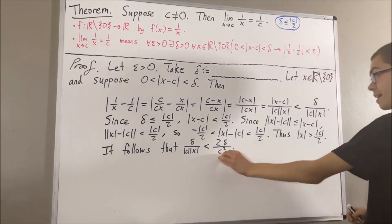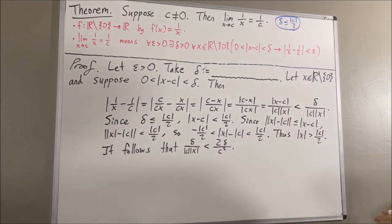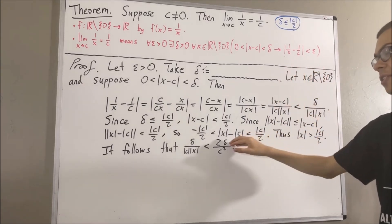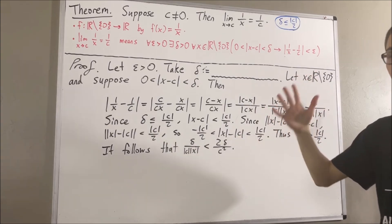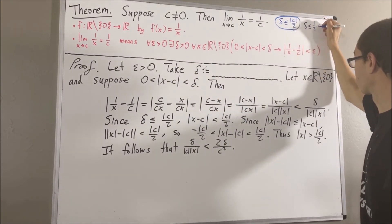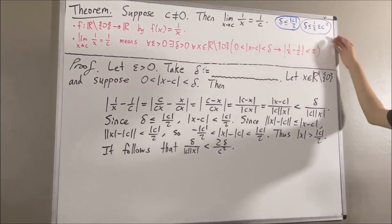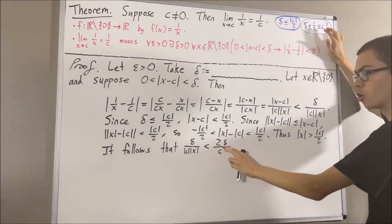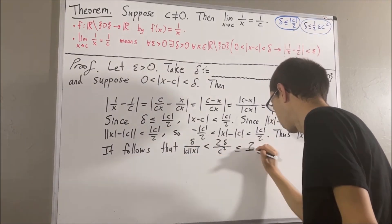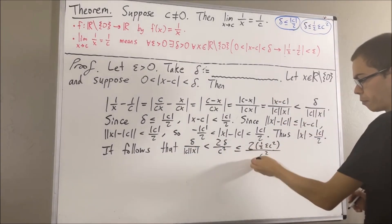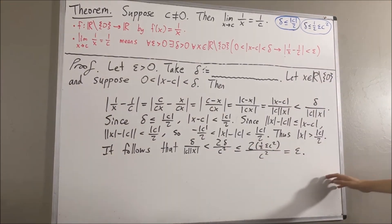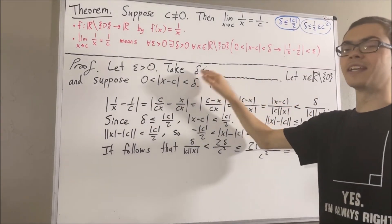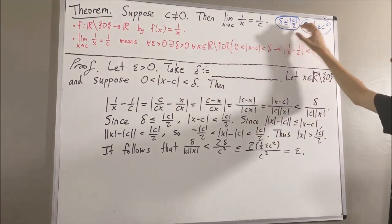And let's remember, the whole goal was to make this guy less than epsilon. So, let's restrict delta to be less than or equal to another positive number. All we've got to do is restrict delta to be less than or equal to 1 half epsilon c squared. If we do that, then this guy must be less than or equal to 2 times 1 half epsilon c squared over c squared, which just simplifies down to epsilon. And so, we have made this guy less than epsilon. All we have to do is define delta so that delta is the smaller of this number and this number.